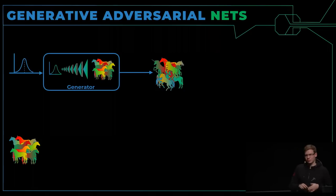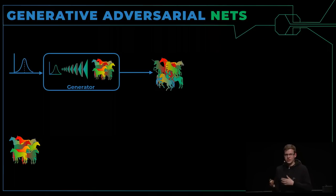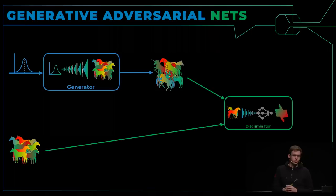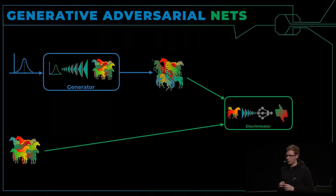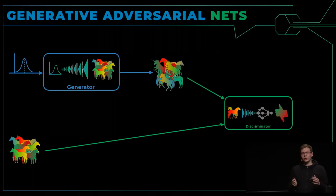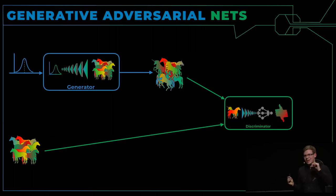Wir müssen das erst trainieren. Am Anfang bekommen wir nicht nur Pferde raus, sondern auch besondere Pferde — zum Beispiel Einhörner. Man kann also mit diesen Daten nicht direkt trainieren, sondern man muss noch ein zweites Netzwerk bauen, um das weiter zu bearbeiten. Dieses Netzwerk nennen wir Unterscheider, also Discriminator. Wir geben diesem Netzwerk die Daten aus dem Generator und echte Bilder von Pferden. Der Unterscheider sagt mir, ist es ein echtes Bild von einem Pferd oder nicht — er liefert mir einen Wahrheitswert des Bildes.